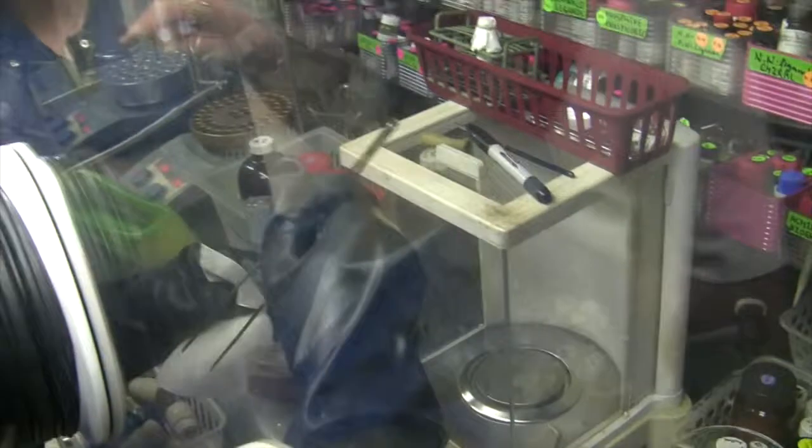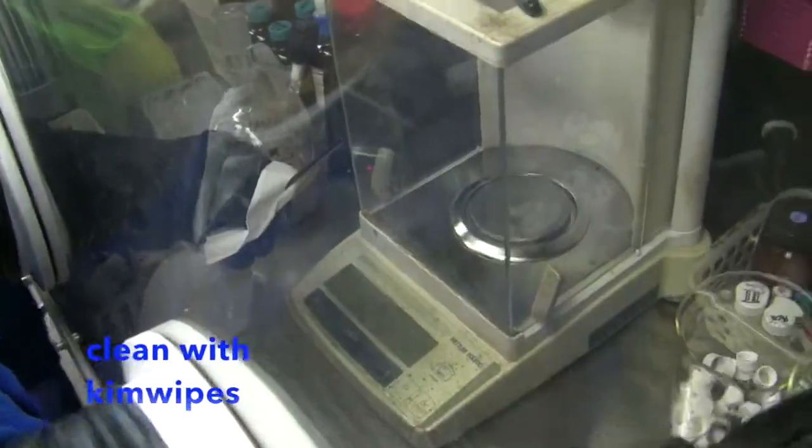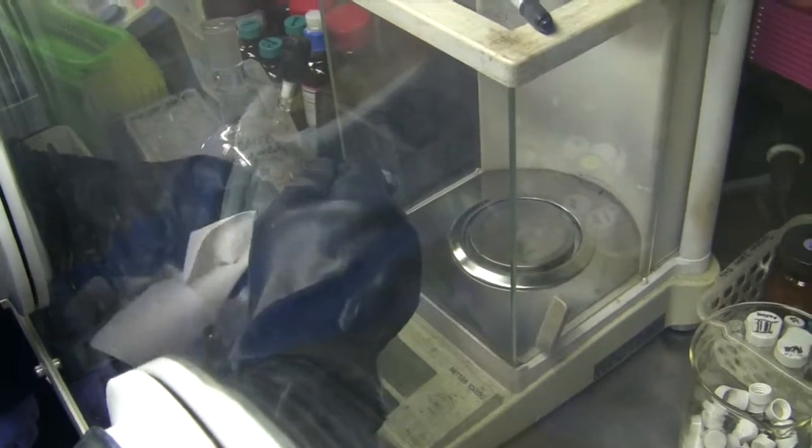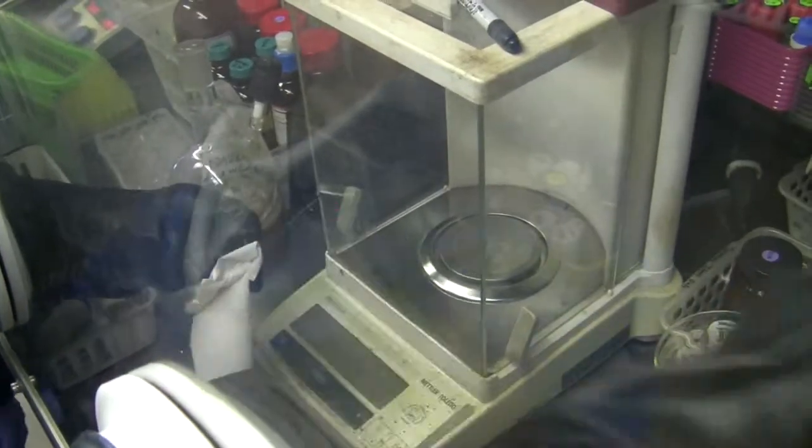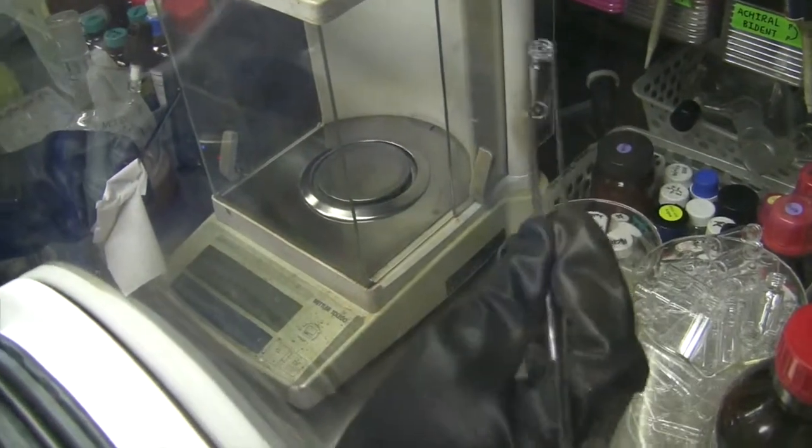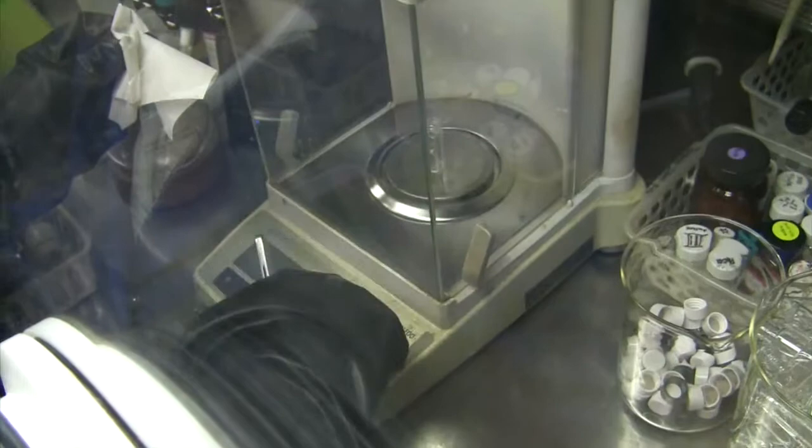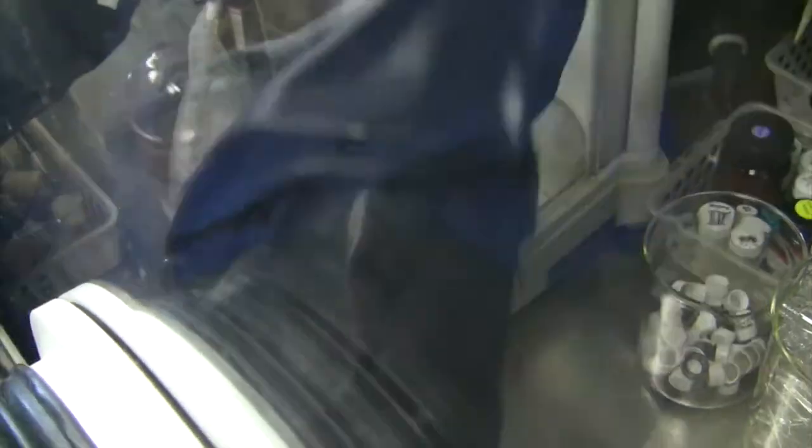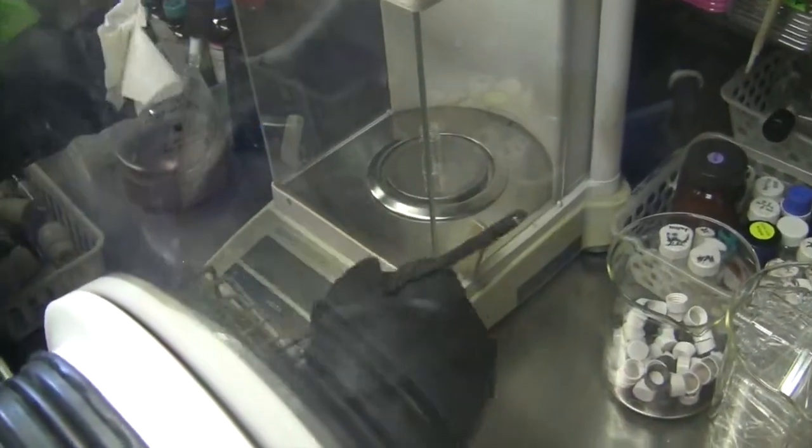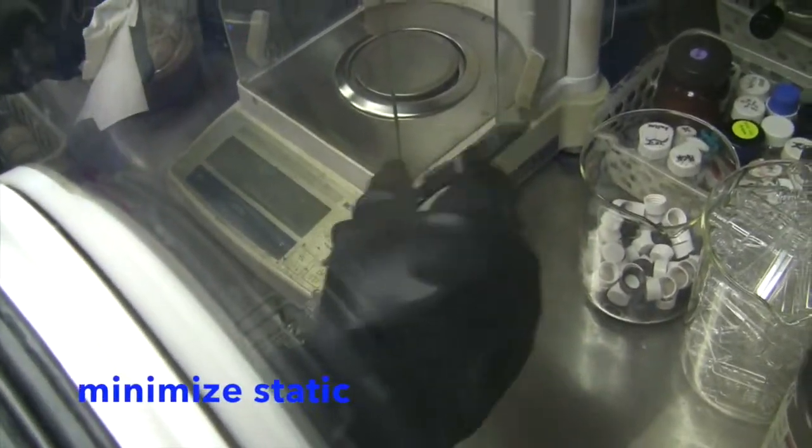Inside the glove box, you can use chem wipes to clean off your spatulas. You also use the tweezers to pick up vials and tare them on the balance. This technique will help you minimize the buildup of static inside the balance.